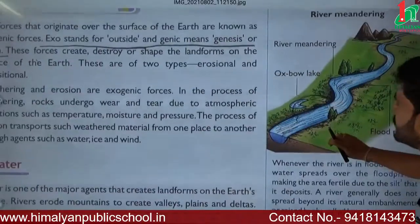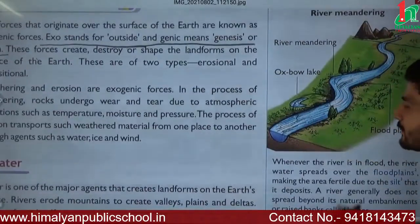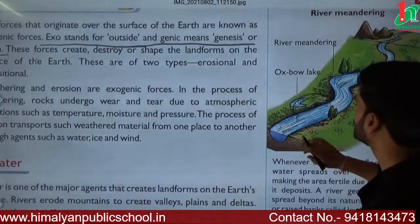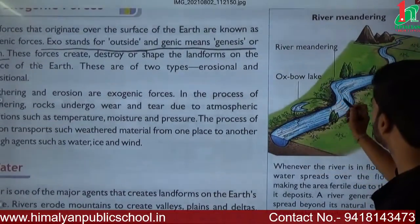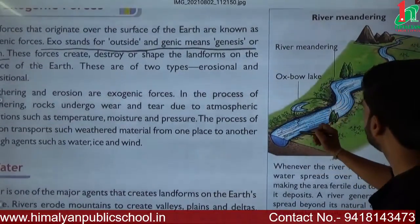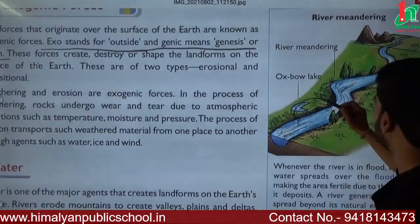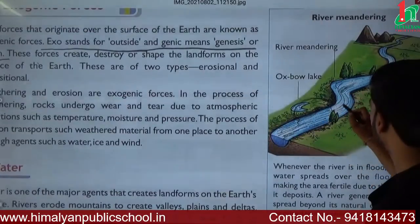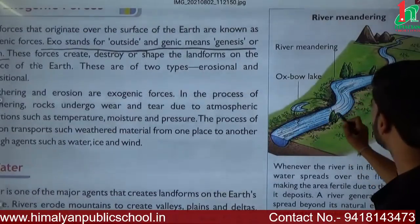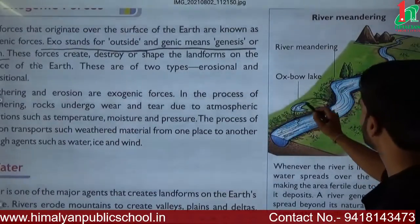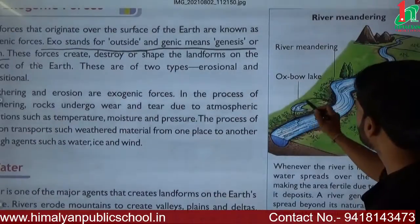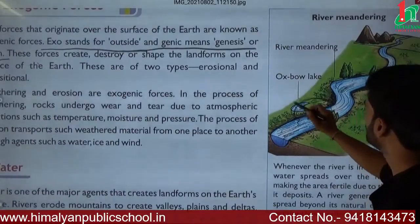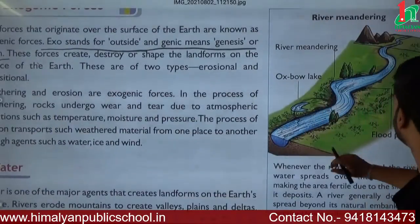An oxbow lake means: in the past, the river flowed from a certain area, but the river's flow changed course. The old portion was left behind, and we call that remaining water body an oxbow lake.